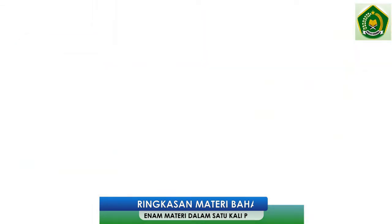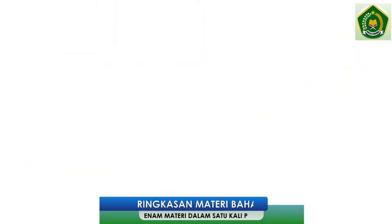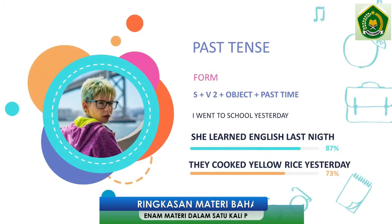Kemudian kita lanjut. Sekarang kita akan bahas tentang past tense — bentuk lampau. Formnya sangat sederhana, anak-anakku cukup menambahkan subject, kemudian follow by verb two, kemudian object, kemudian past tense. For example: 'I went to school yesterday', 'She learned English last night', 'They cooked yellow rice yesterday'.